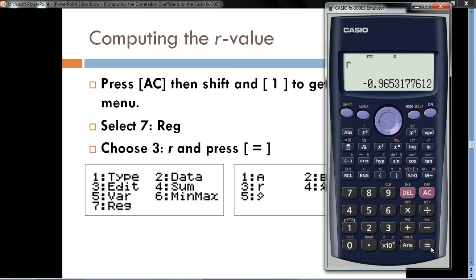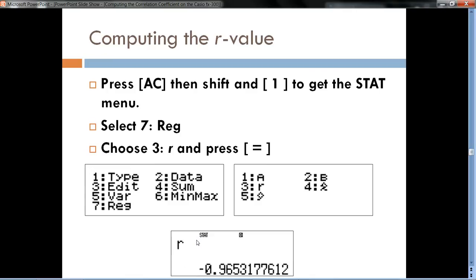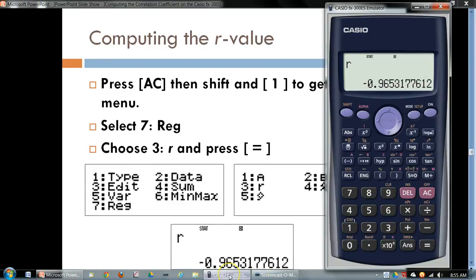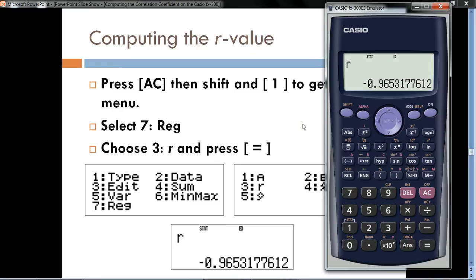Hit the equal sign. And there we have it, the sample linear correlation coefficient of the data. So it looks like that value is negative 0.965. Conventionally, we round this correlation coefficient to three decimal places. So that's it. That's how we compute the correlation coefficient on the Casio FX300ES scientific calculator.